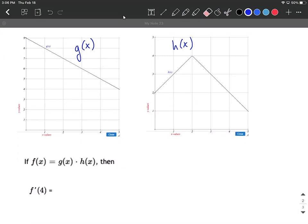We have a product going on here, and what we want to do is calculate the derivative of f at a specific value of 4. To do so, we're going to have to use the product rule to calculate the derivative.